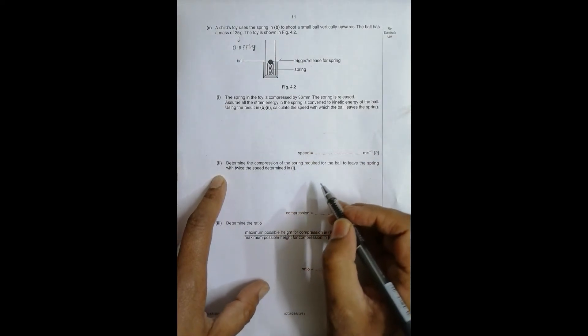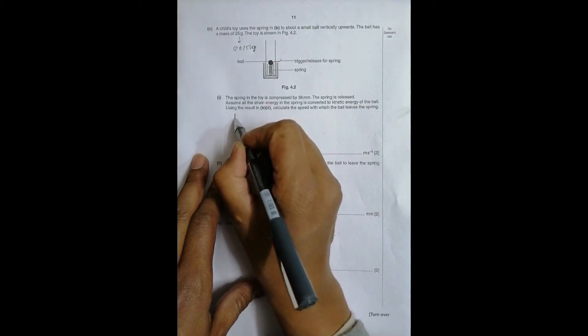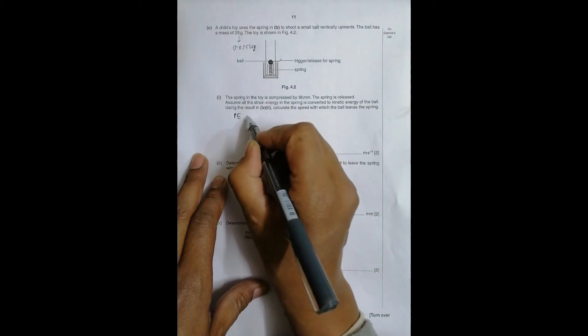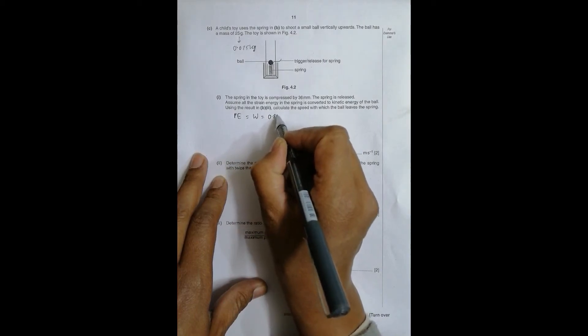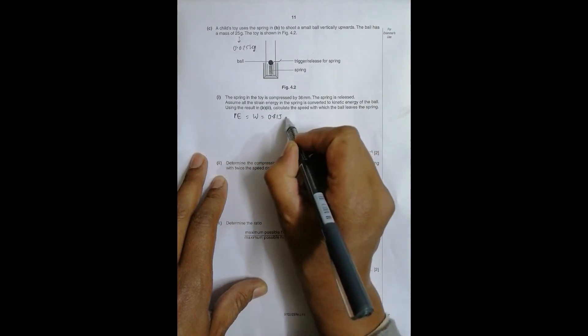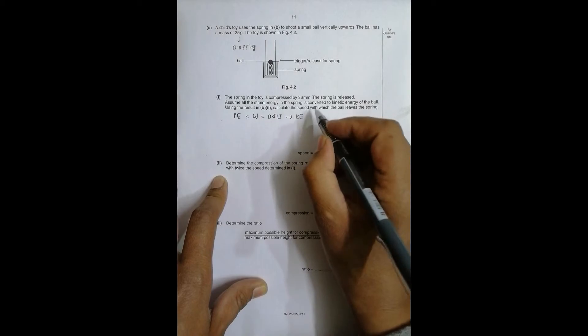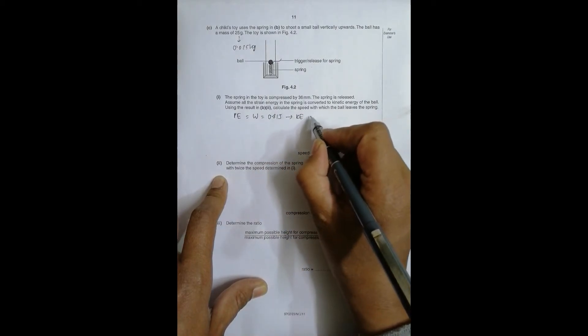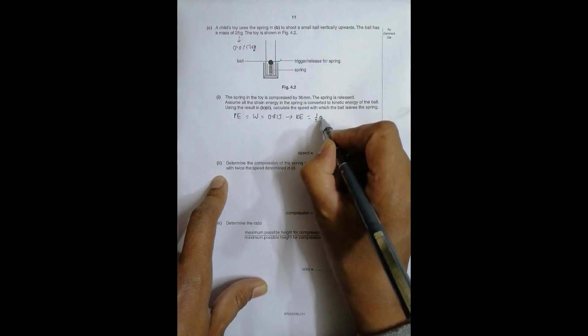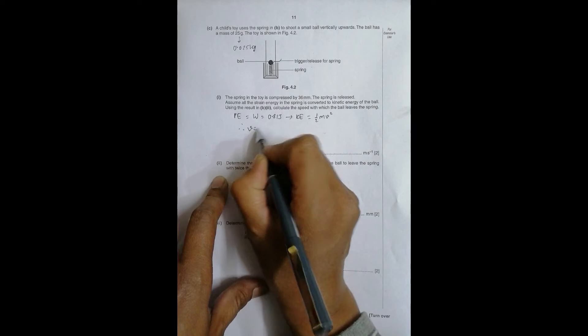So what we have here is if there's no loss, the PE stored in the spring is equal to the work done that we have done, is equal to 0.81 joules, and this is fully utilized in creating the KE of this thing. No loss means it converts to KE. So that's equal to KE is equal to 1/2 mv^2. This gives me v is equal to root 2 into 0.81 by this mass.